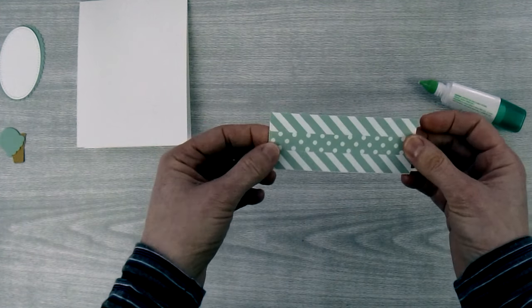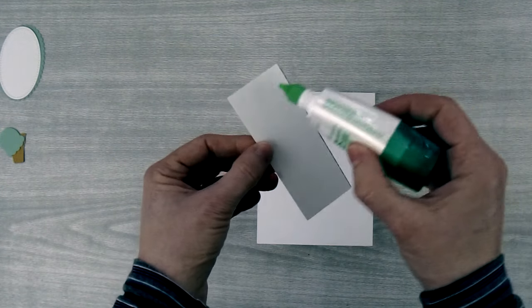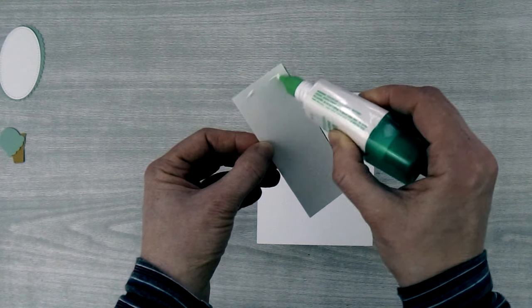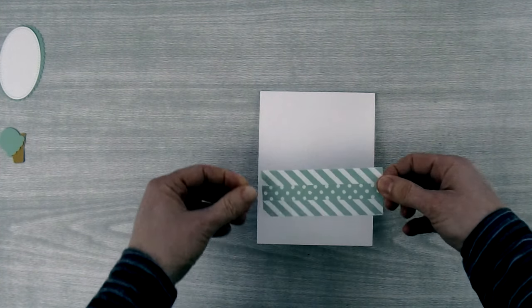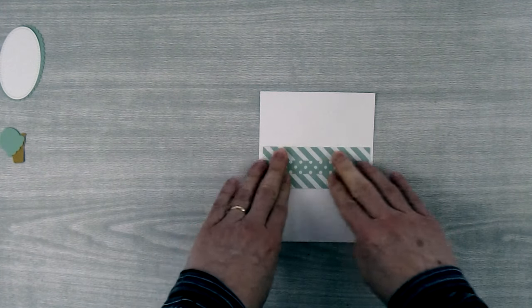Now this piece is all ready to be put on our card base and I'll put some glue on the back of the Whisper White piece and I want to center this piece on my card front. That looks pretty good.